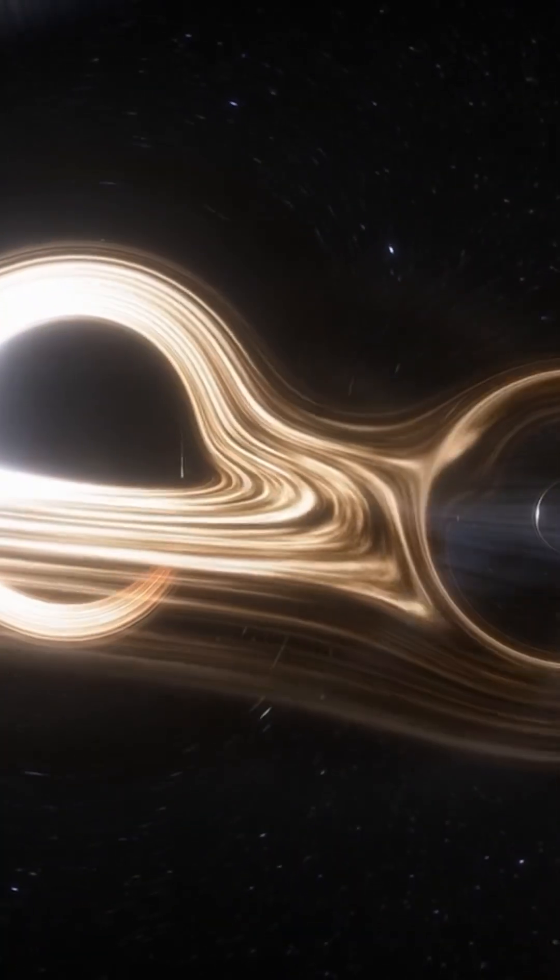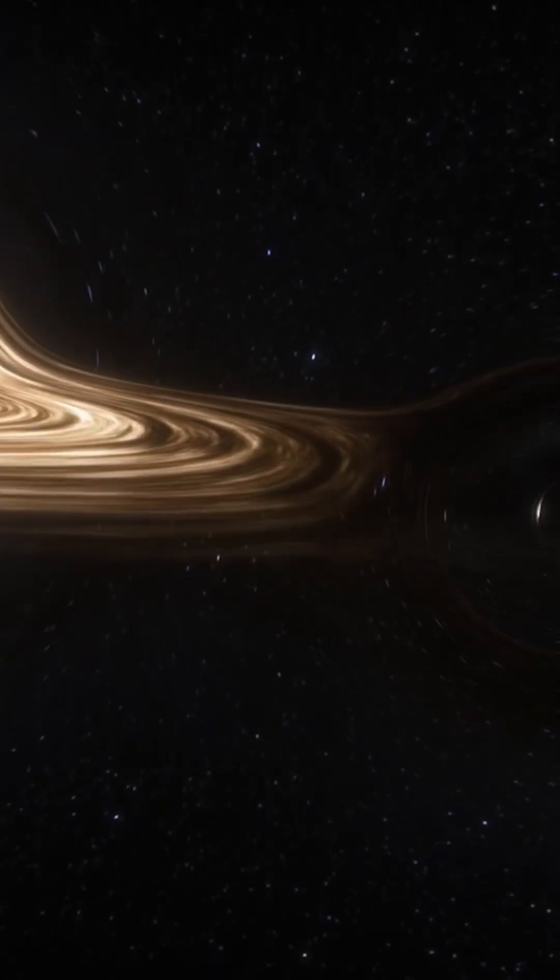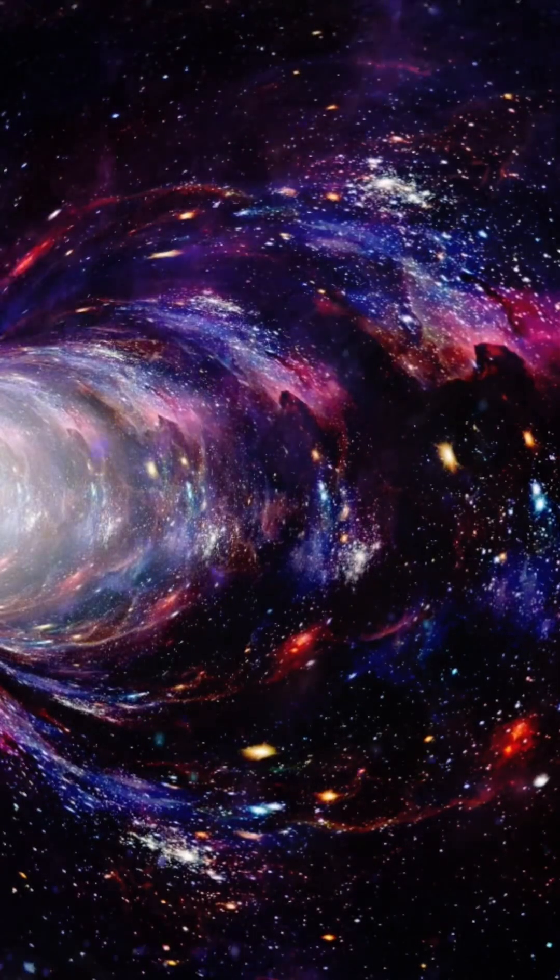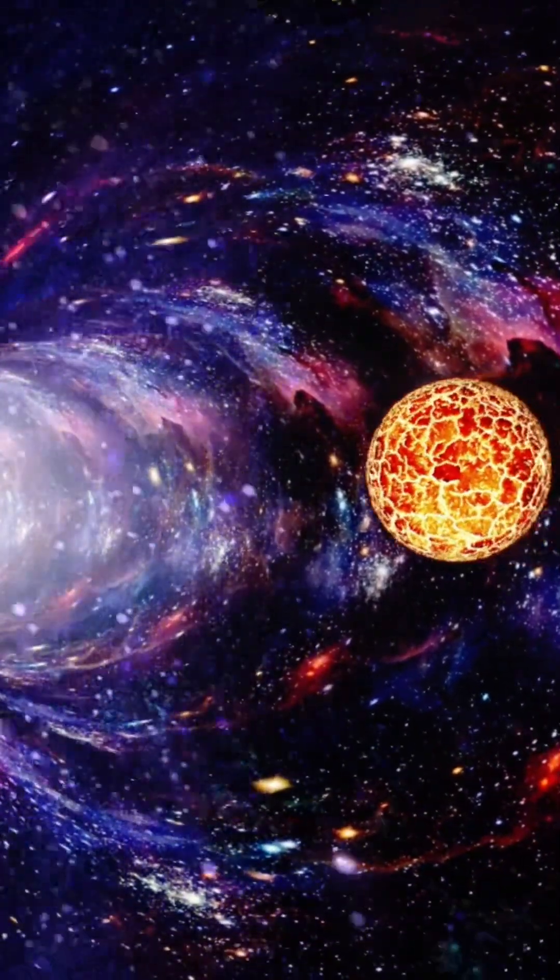Black holes can collide and merge, creating ripples in space-time known as gravitational waves. These events have been detected by observatories like LIGO and Virgo, confirming predictions made by Einstein's theory of general relativity.